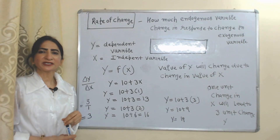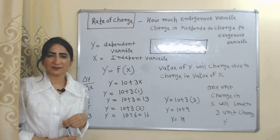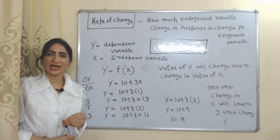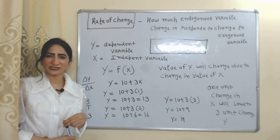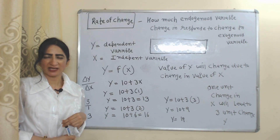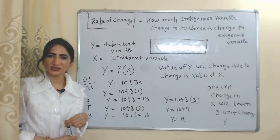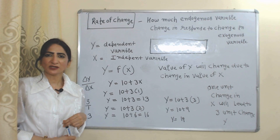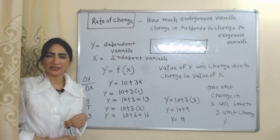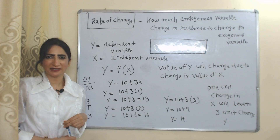Rate of change explains how much the endogenous variable changes due to change in the exogenous variable — in other words, how much the dependent variable changes due to change in the independent variable. Rate of change is measured by the difference quotient.